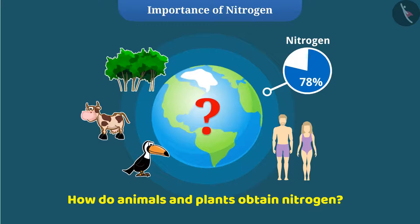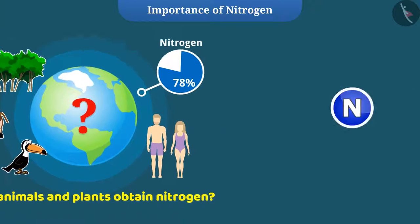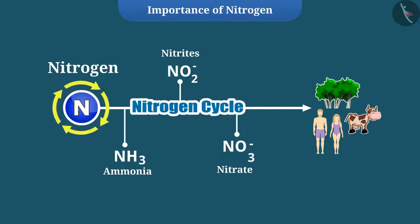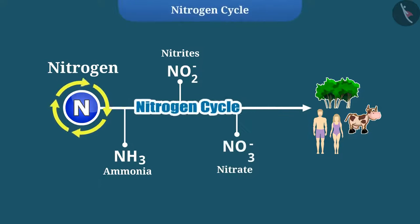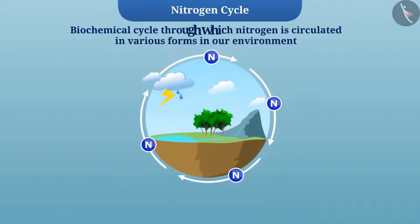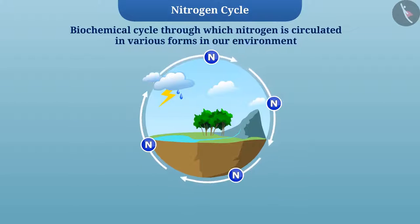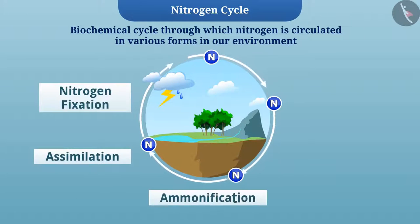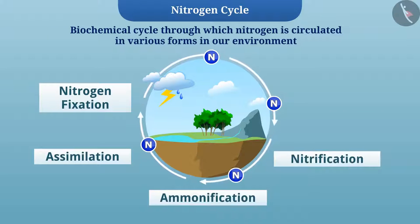Animals and plants obtain nitrogen in usable forms such as ammonia, nitrates, and other usable forms of nitrogen with the help of the nitrogen cycle. The nitrogen cycle is a biochemical cycle through which nitrogen is circulated in various forms in our environment. This cycle has various stages such as nitrogen fixation, assimilation, ammonification, nitrification, and denitrification.